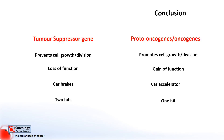Because we have two copies of each gene, in the case of tumor suppressor genes, you need both copies to be taken out to lead to the development of cancer — so they need two hits. In the case of oncogenes, they just need one mutation.